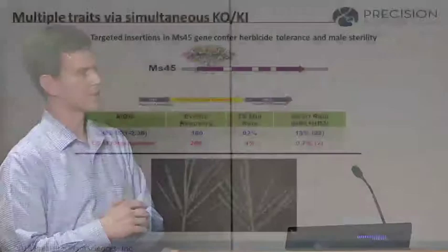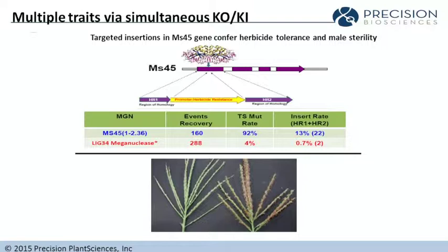The third example is that you can do simultaneous knockout-knockins. In this case, a herbicide tolerance gene, shown there in yellow, was flanked by homology regions and was introduced into another male sterility locus called MS45. The end result was that herbicide-tolerant plants were created that were also male sterile, because the gene went into where it was targeted.